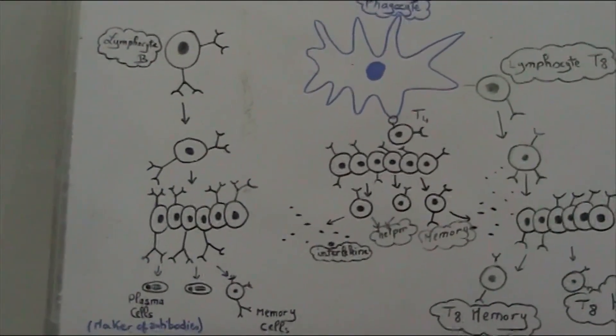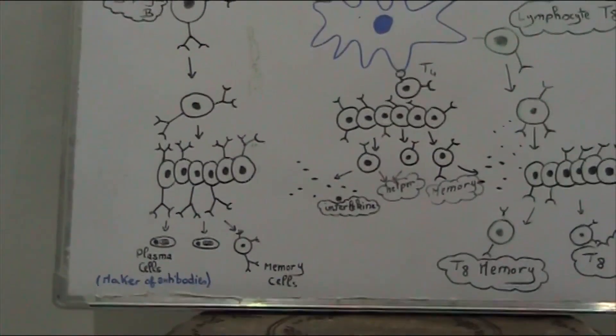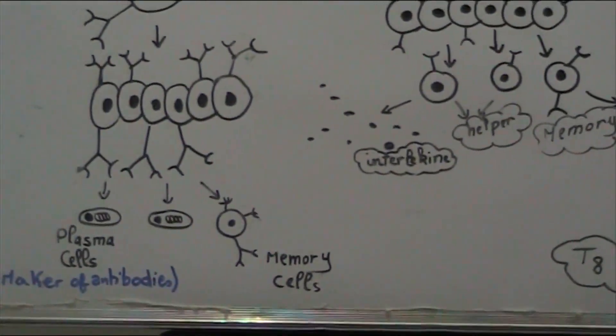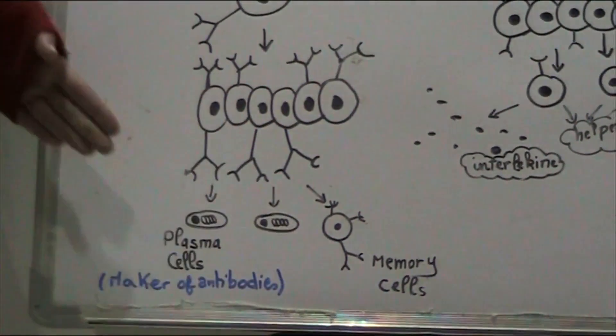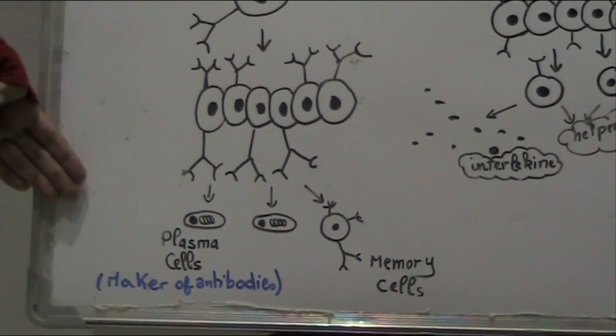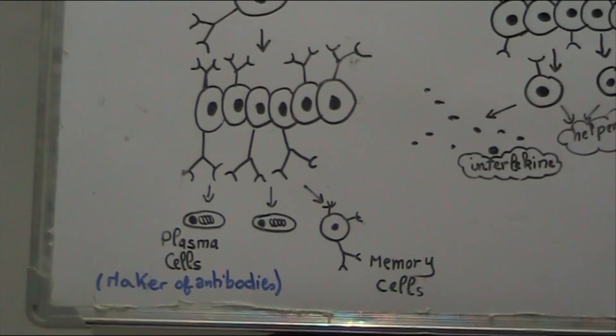What's about the humoral response? When an informed B cell recognizes the antigen, it is divided which leads to the production of many memory B cells and plasma cells by which antibodies are made to destroy microbes. That's what we call the humoral response.